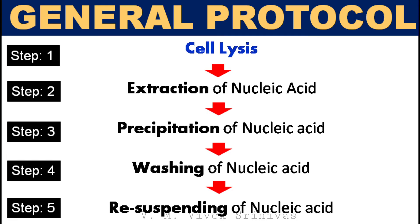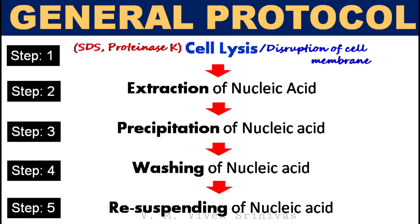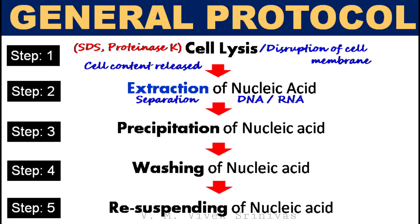The first step is cell lysis. Initially, the cell membranes must be broken in order to release the cellular contents using sodium dodecyl sulfate and proteinase K enzyme. The second step is extraction of nucleic acid. Once the cell content is obtained, separation of nucleic acid from the cellular proteins and lipids is carried out using the phenol-chloroform mixture.